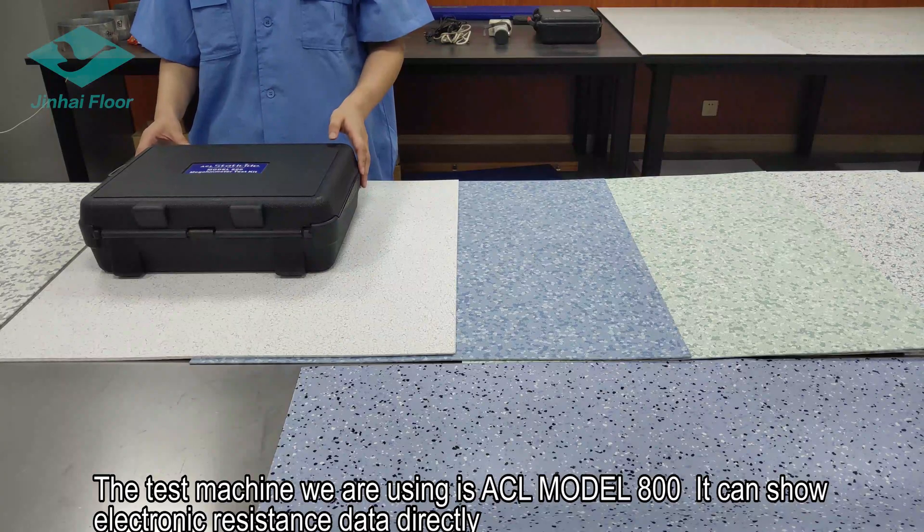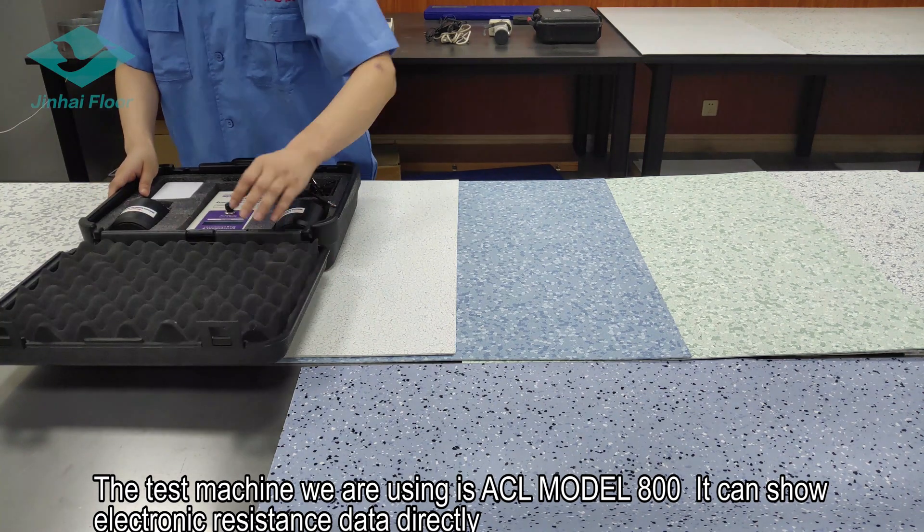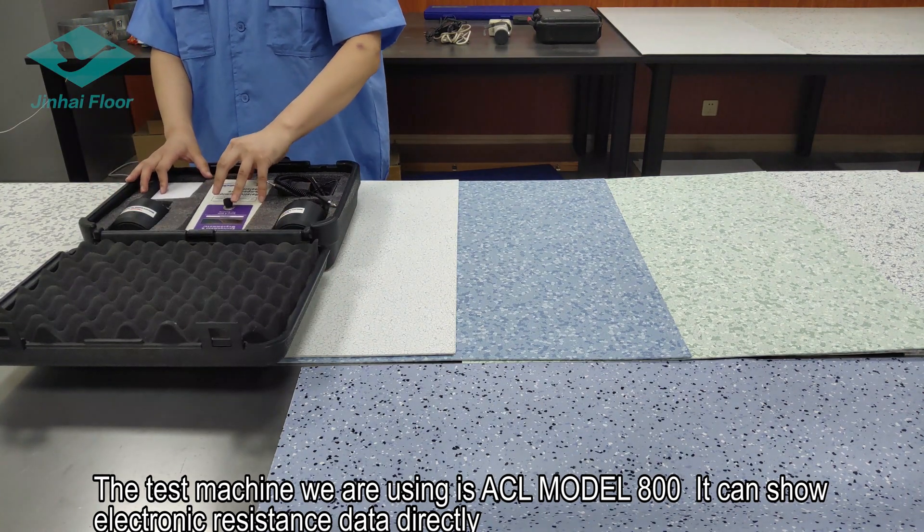The test machine we are using is ACL model 800. It can show electronic resistance data directly.